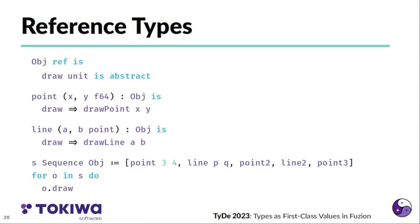We can define a sequence of objects that contains a mixture of points and lines, and we can iterate that sequence and call draw on these. And what happens now is when we assign these points or lines to that sequence, they get boxed, they get wrapped into usually heap-allocated objects that are equipped with type information similar to the tagged union types. And this type information is then used on a call to decide which version of the draw function should be called.